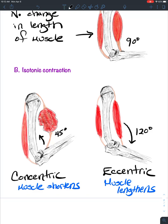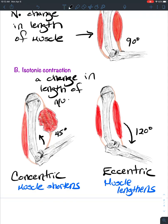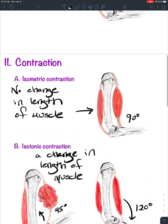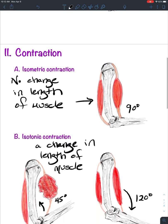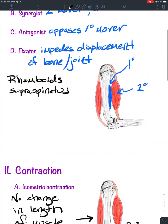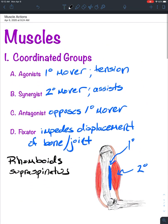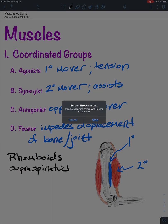So isotonic contraction is when there is a change in length of the muscle. I hope this video helps you out with both the different types of contraction and the coordinated muscle groups.